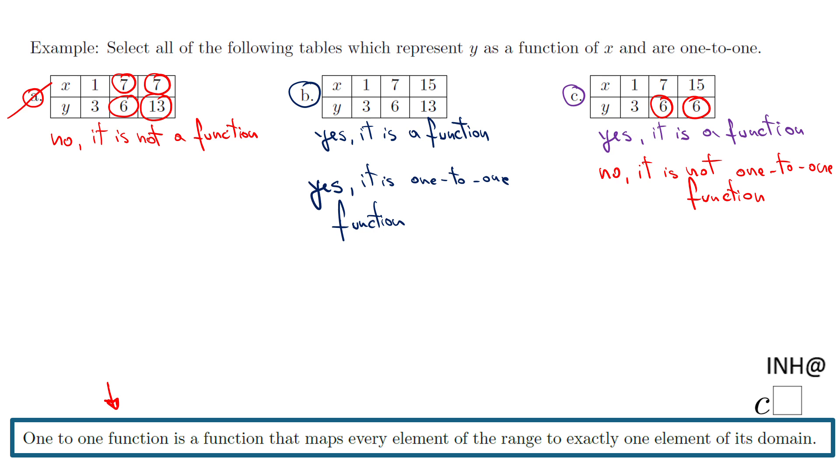A couple more things here. You may hear this word bijection, so we call this function a bijection. Or also you may hear the word monotonic—one behavior. This function has one behavior. If you take a look, it's increasing: one, three, seven, six, fifteen, thirteen. It's one behavior, monotonic.